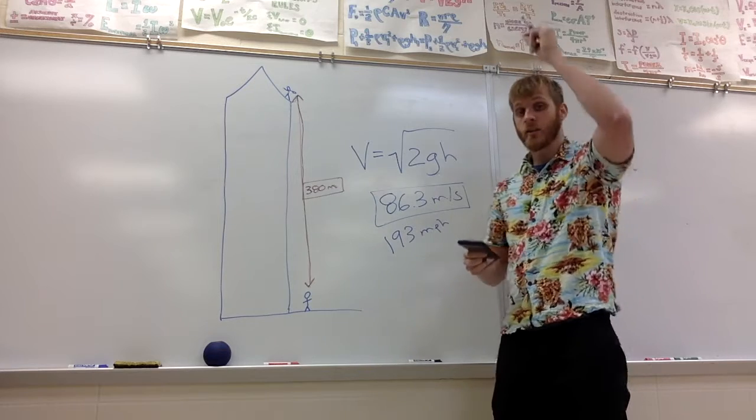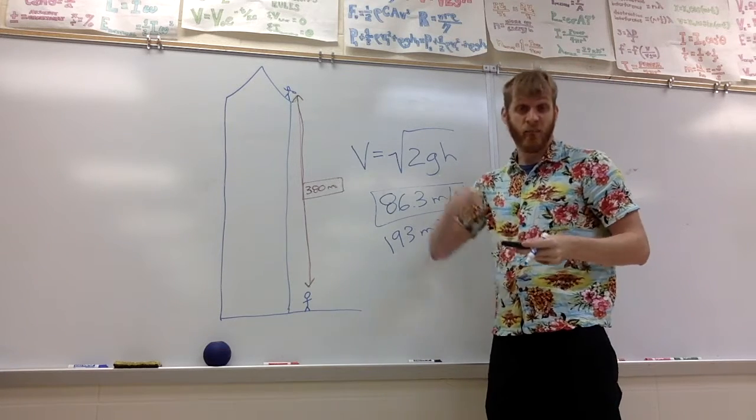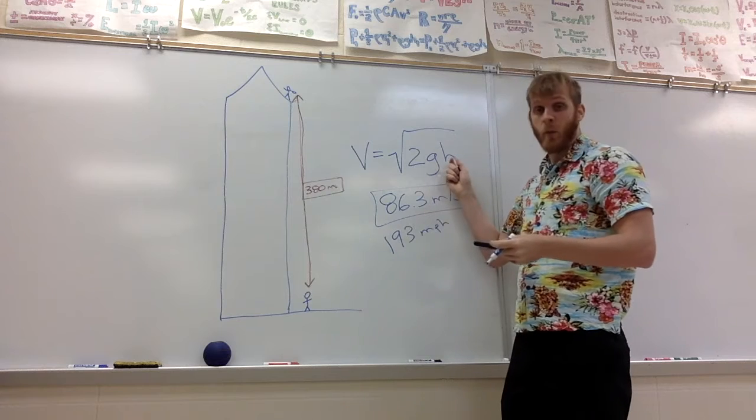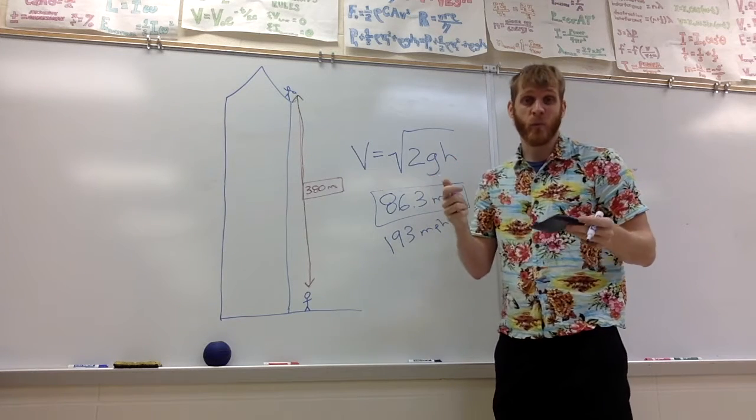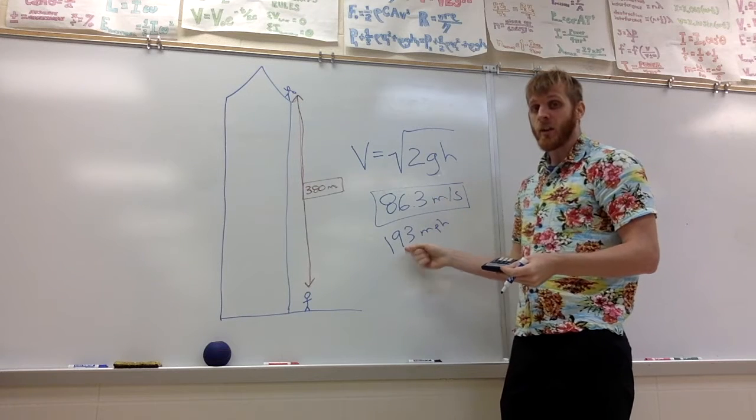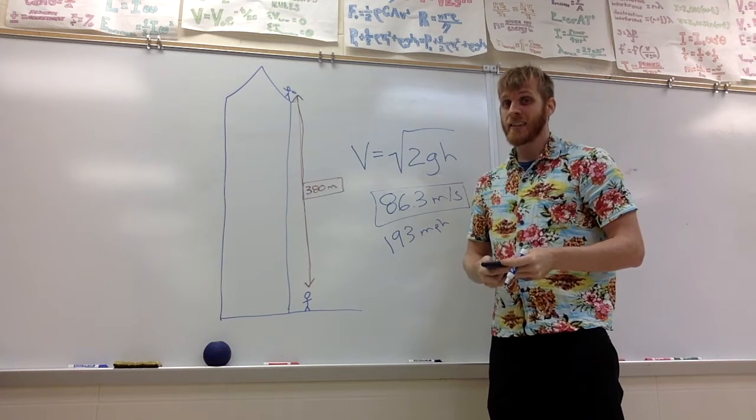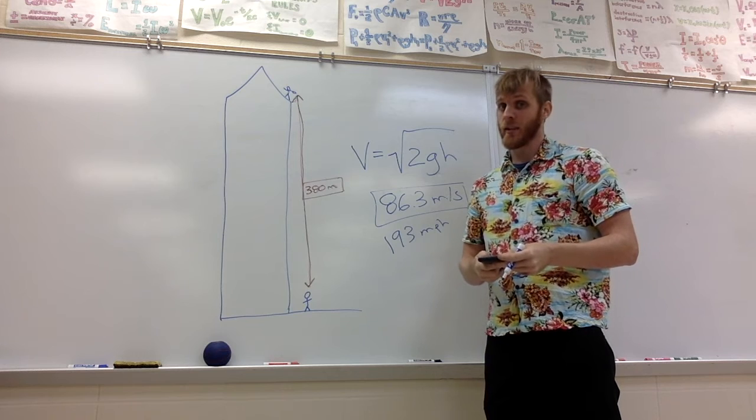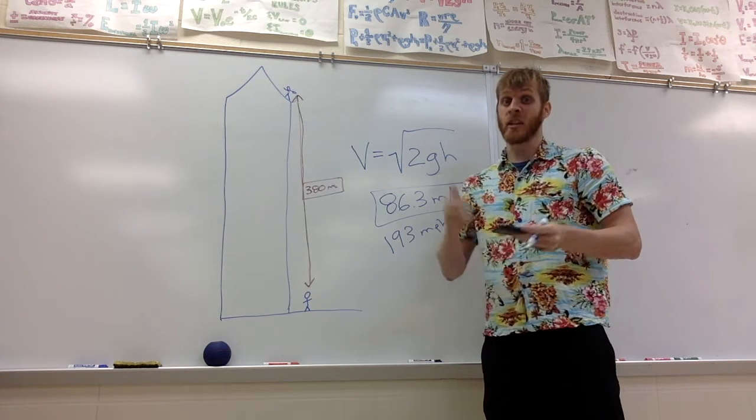Especially since when I dropped the penny from one meter above my head and I felt it at one meter, the velocity of that is about 4.4 meters per second, or about 9 miles per hour. So 193 miles an hour versus 9 miles an hour, that's going to be quite a bit different. So I'm thinking that that penny could definitely do a huge amount of damage.